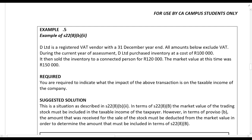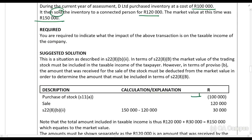Example five: D Limited is a registered VAT vendor with a 31 December year-end. All amounts below exclude VAT. During the current year of assessment D Limited purchased inventory at a cost of one hundred thousand rands. They then sold the inventory to a connected person for one hundred and twenty thousand rands when the market value was one hundred and fifty thousand. That's a problem — that's not a normal sale. So claim a deduction for the one hundred thousand rands, add the actual gross income, and the Section 22.8 amount is the market value less the amount received as consideration.